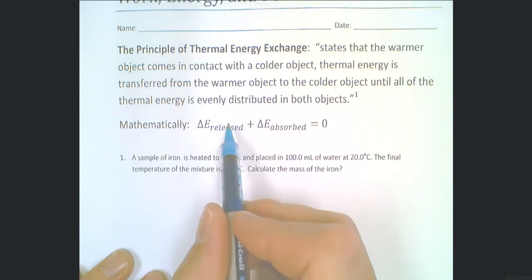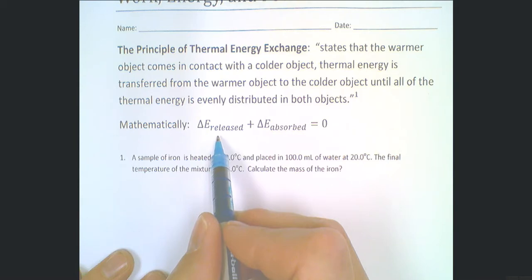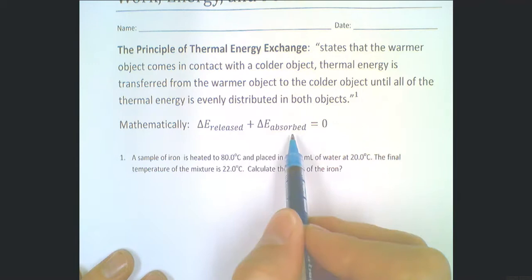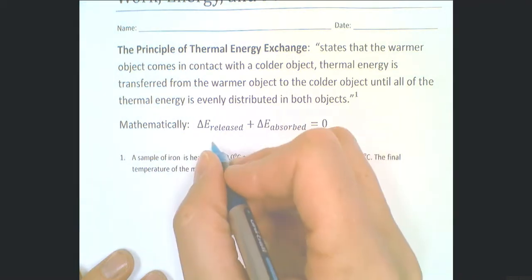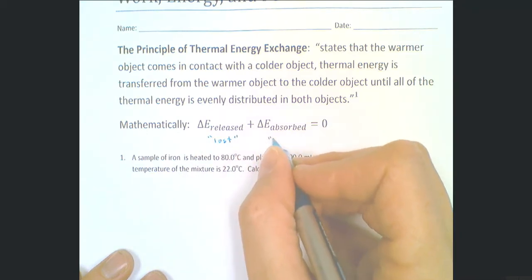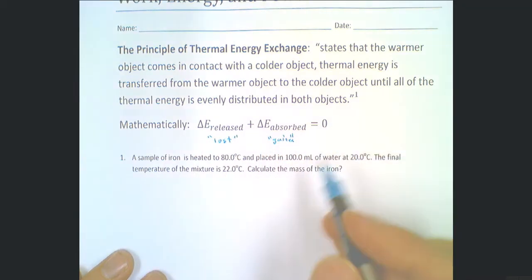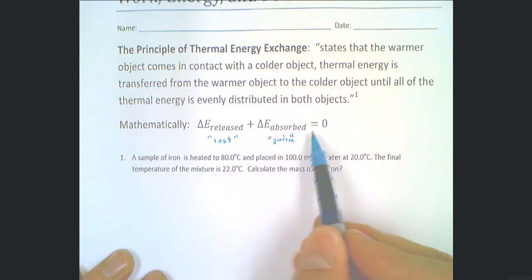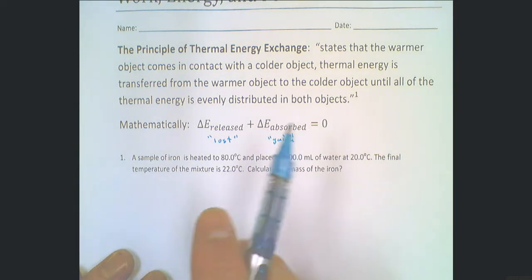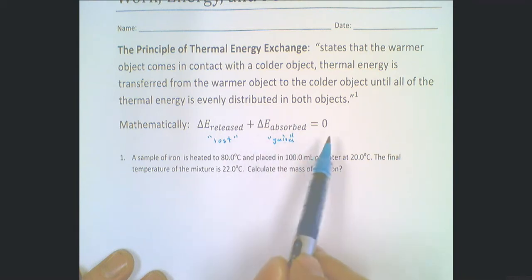In chemistry, sometimes you'll see this written as ΔE lost and ΔE gained. And sometimes you'll even see it written as energy lost equals negative energy gained, where that term is moved to the other side. Either way, it's the same relationship — the amount of energy released plus the amount of energy gained must equal zero.